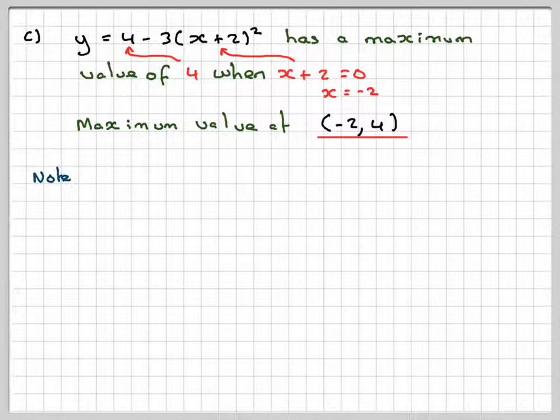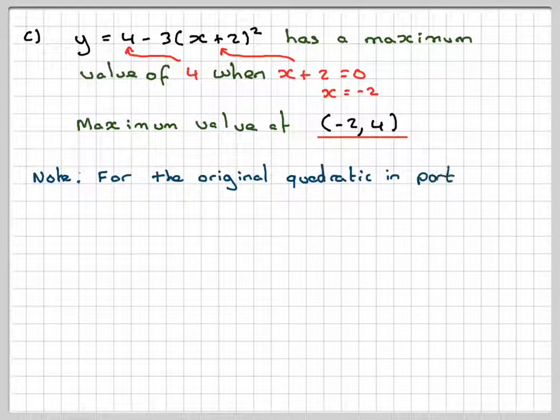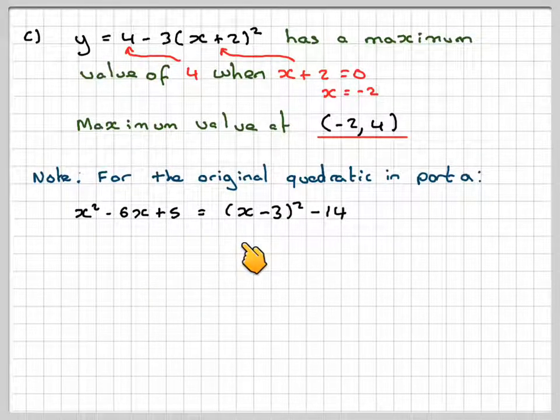Now, if we think back to the original quadratic, this is no longer part of the question, but the original quadratic in part a was x² - 6x + 5, and we showed that it could be written as (x - 3)² - 14.